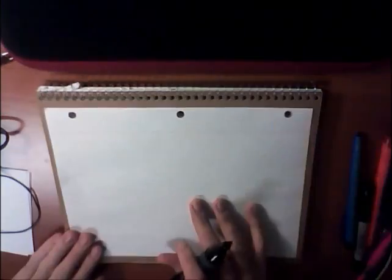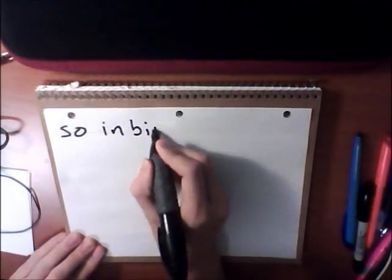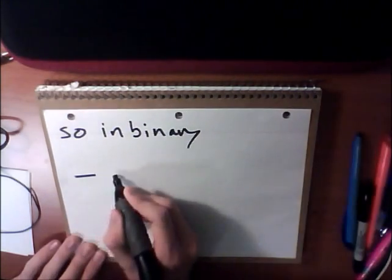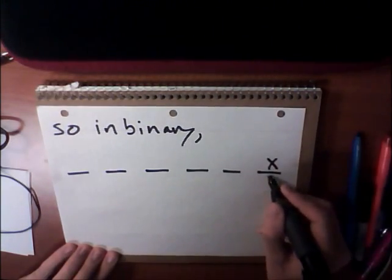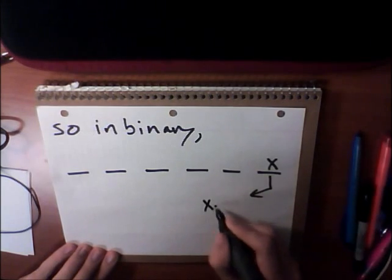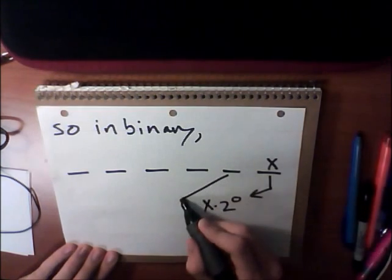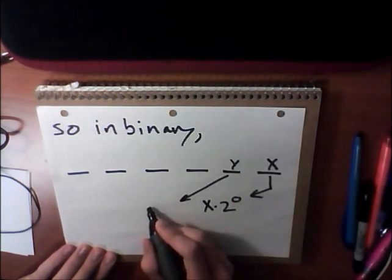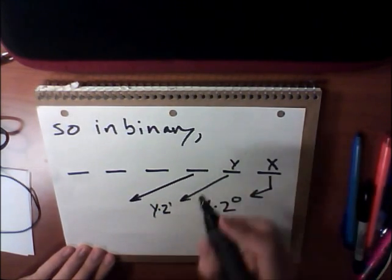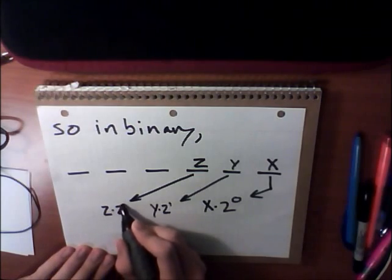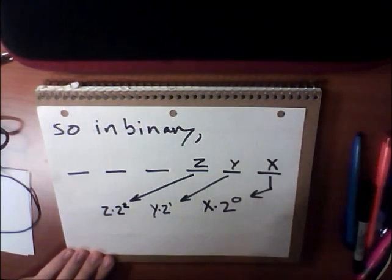So here's a quick little diagram to help elaborate on this a bit more. As we can see, the placement is essentially the same as the exponent to the 2 times whatever digit is in that place, as we can see here.